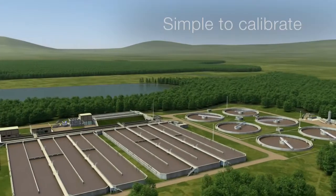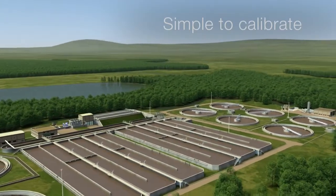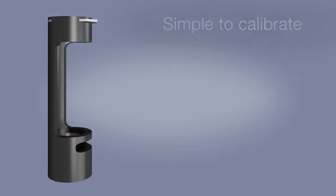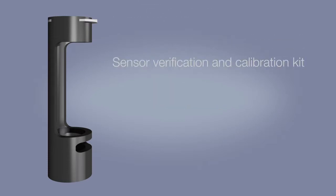The ATS-430's performance can be easily verified with ABB's Sensor Verification and Calibration Kit. Simple, safe, and cost-effective, the Sensor Verification and Calibration Kit provides the accuracy of a Formazine calibration without the need for using chemical standards that can be costly, dangerous, and difficult to prepare.